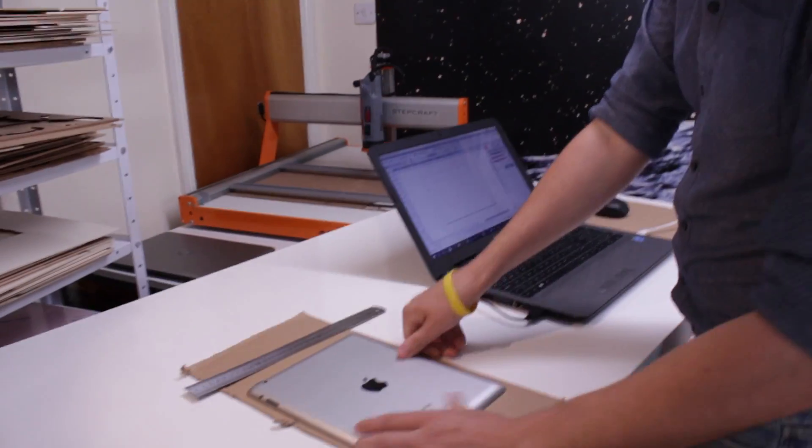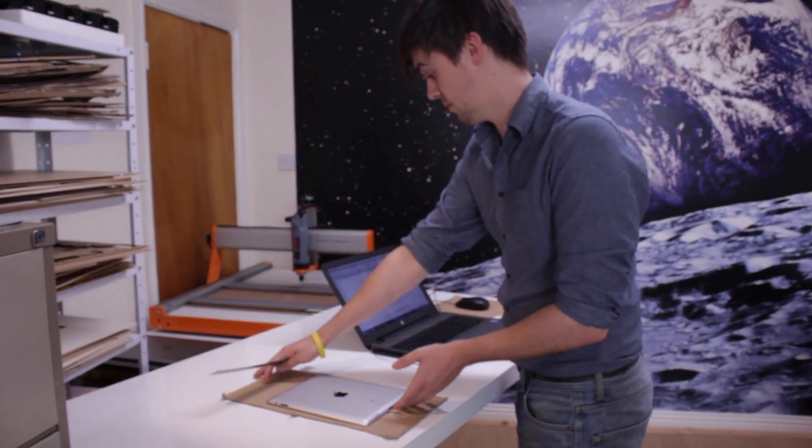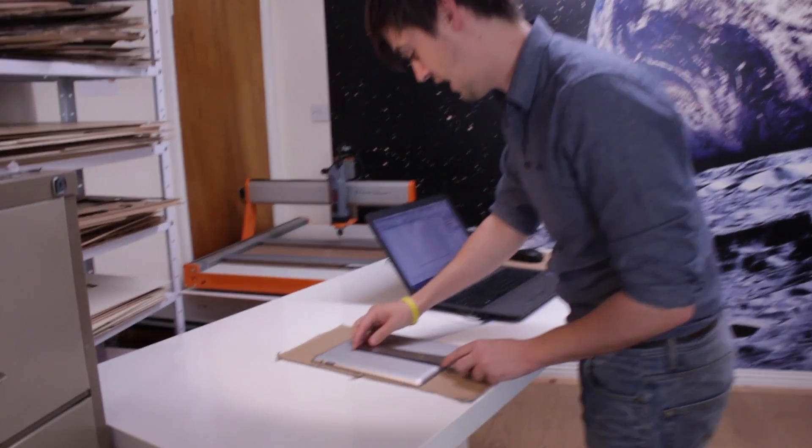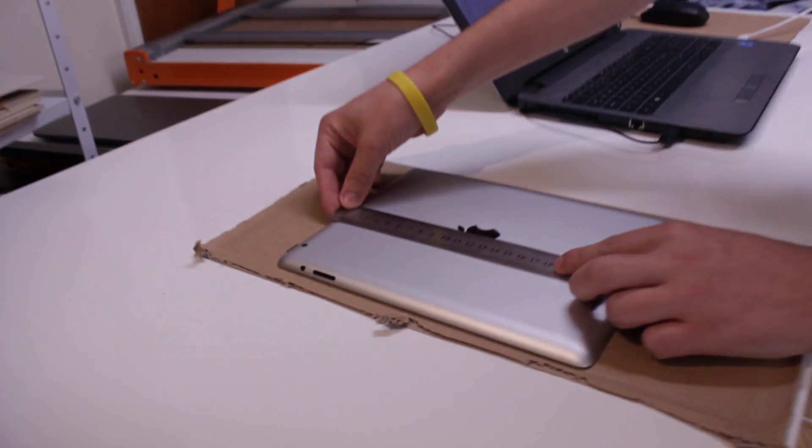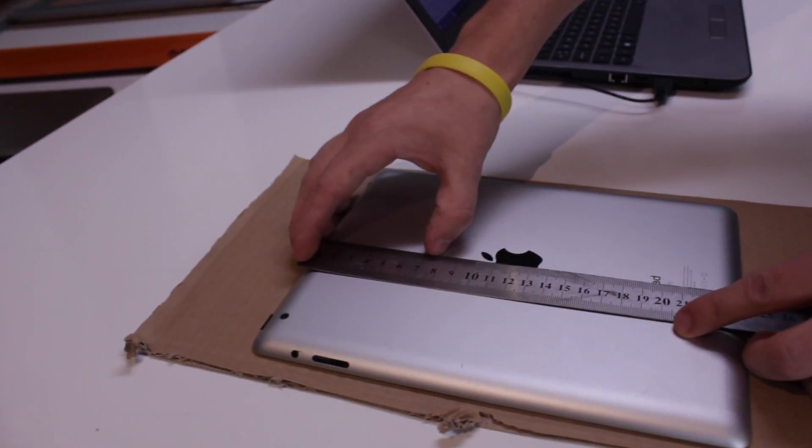So the next thing to decide is where do we want our engraving on our iPad. So this is the job we're going for. It's going to go 60mm down from the top of the iPad here, and the logo is going to be 15mm tall.